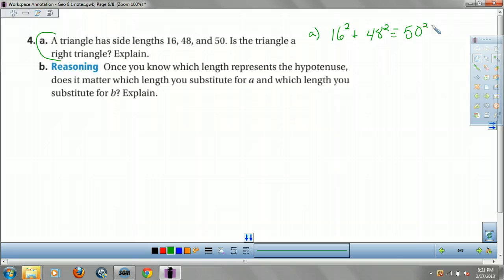Well, 16 squared is 256. 48 squared is 2,304. 50 squared is 2,500. Right? Well, 256 plus 2,304 is 2,560.